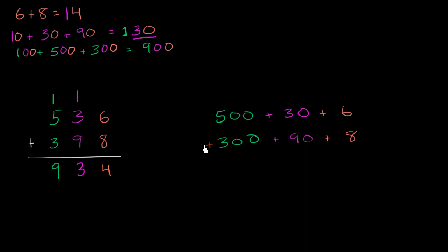Now let's start in the rightmost column, this ones column. 6 plus 8, we've already figured out, is equal to 14, which is the same thing as 10 plus 4. So let's write the part that's not a multiple of 10 in this ones column. So let's put the 4 there.